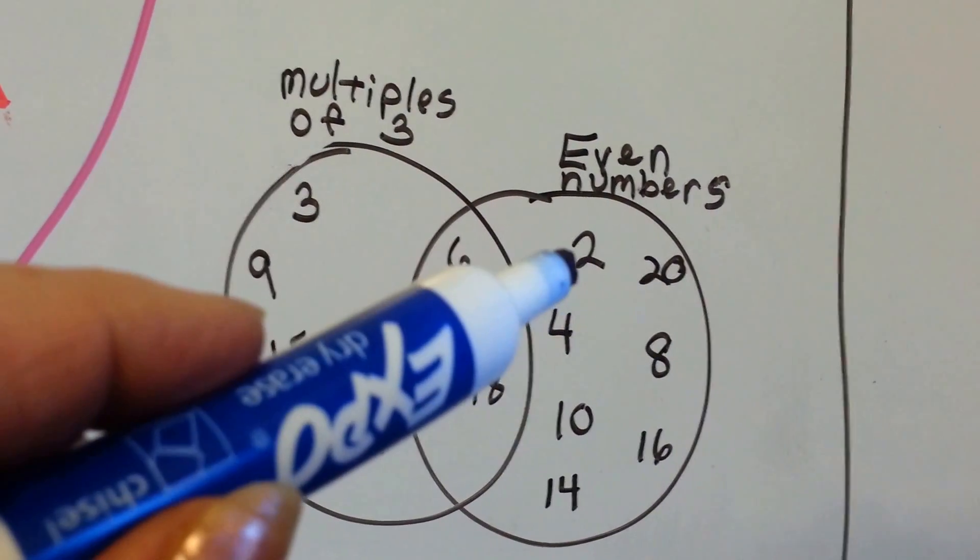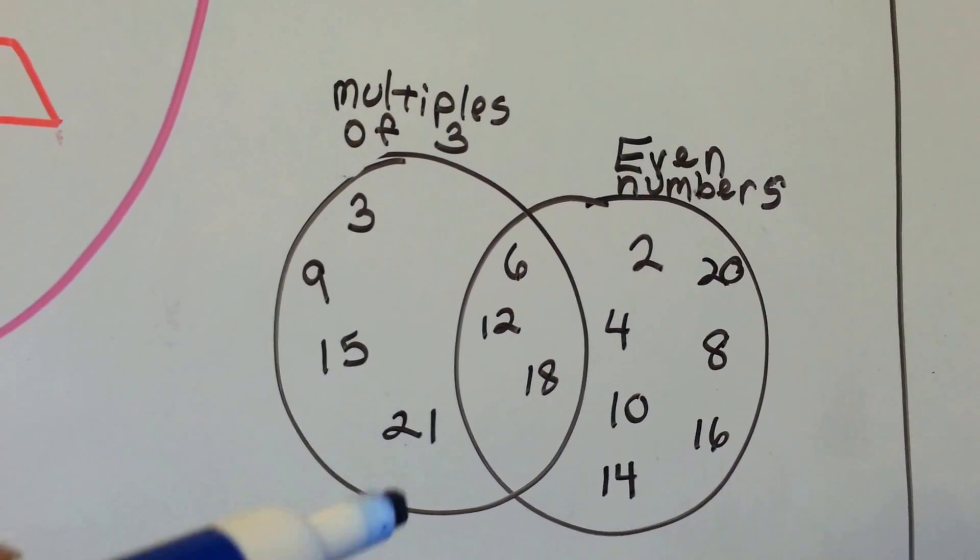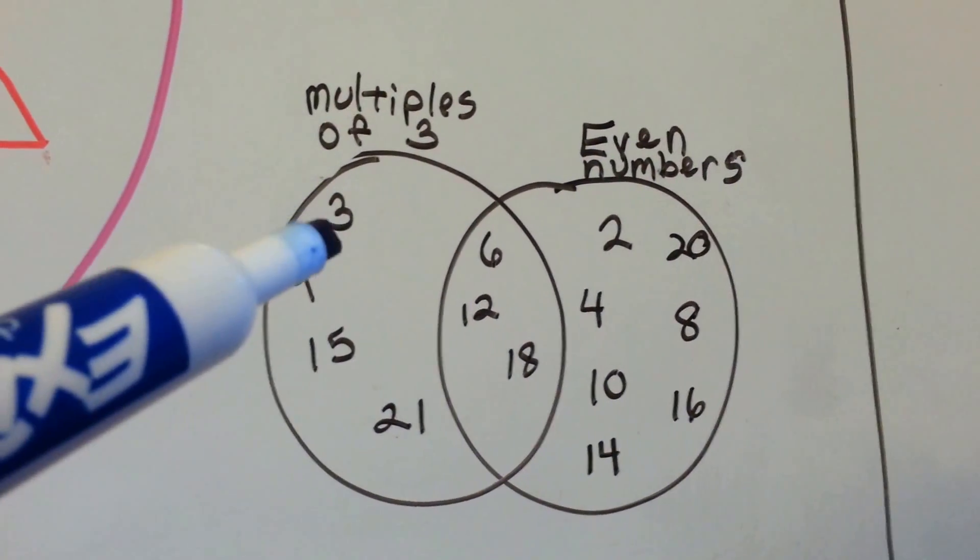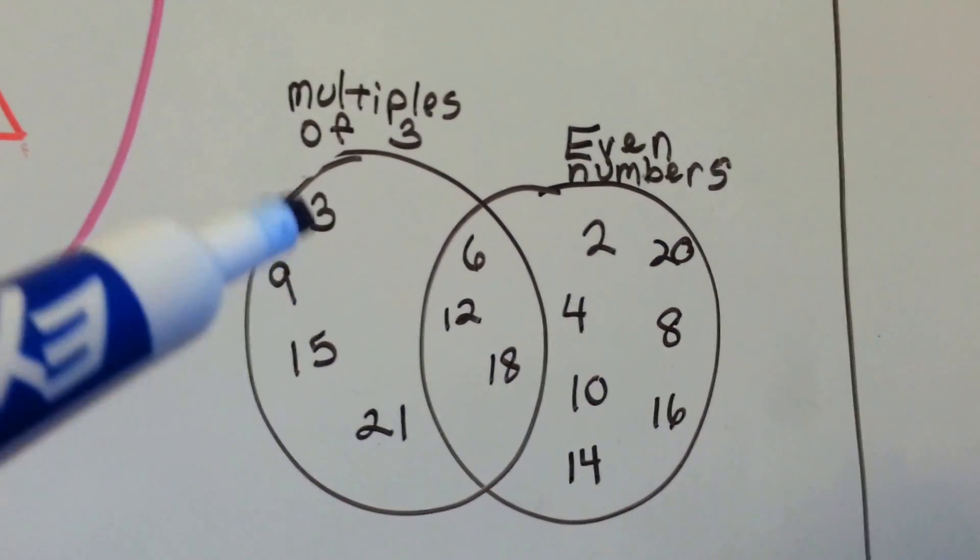The number 2 is an even number, but it's not a multiple of 3. So we have 3, but that's not an even number, so that's on that side.